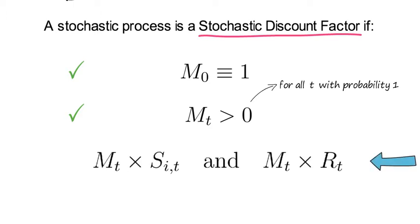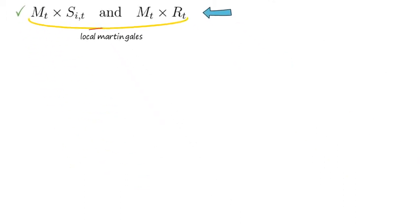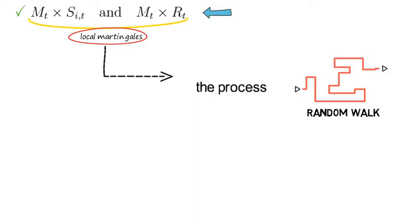the product of MT times SIT as well as the product of MT RT need to be local martingales. Now being a local martingale means that the process itself follows a random walk. So its conditional forecast into the future just coincides with its current value.